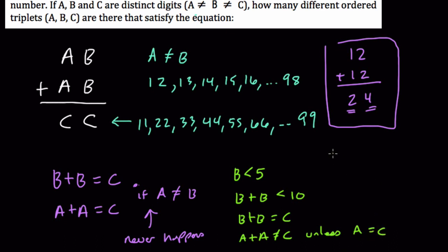especially when B is less than 5, unless A equals C. And that's easy to test, because if you have 1 plus 1 as B, that equals 2. There are no other numbers, except for 1 plus 1, that equals 2.